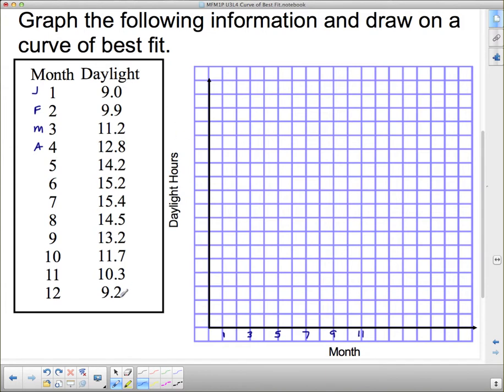And the biggest amount of daylight hours, it looks like, is 15.4. So, I need to get from 9 to 15.4. And I've got a lot of space up here. So, first of all, I'm going to say, I'm not going to start it at 1. I'm going to put that little jump there. And I'm going to let this be 9.0. And I need to get to 15. So, how many spaces do I have here? Should I go 9, 10, 11, 12, 13, 14, 15? That's pretty low. I can probably do every 2.